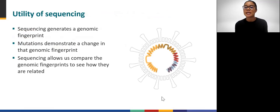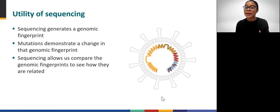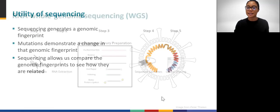Let's talk about sequencing and what exactly it does. It goes back to the fact that viruses mutate as they spread. Sequencing provides a genomic fingerprint of a particular virus. As the virus spreads and mutates, scientists can pick up these mutations by sequencing and examining the genomic fingerprints. Scientists can then compare these genomic fingerprints for various cases in a population of interest and see how the cases are related.